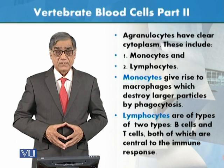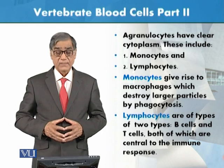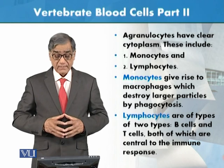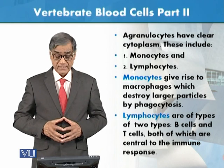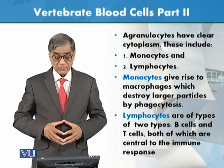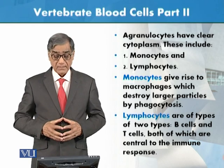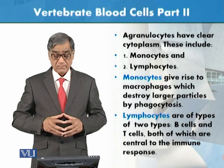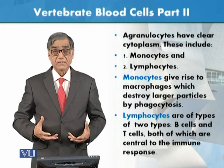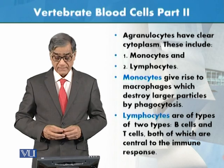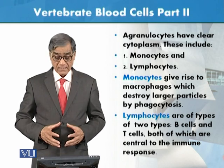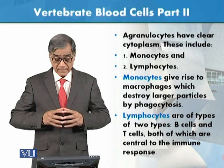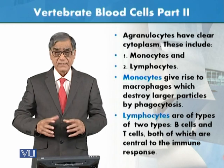Now regarding agranulocytes: agranulocytes have no granules in their cytoplasm and include monocytes and lymphocytes. Monocytes give rise to macrophages, which destroy large particles by phagocytosis. Lymphocytes are of two types — B cells and T cells — and both are central to the immune response.